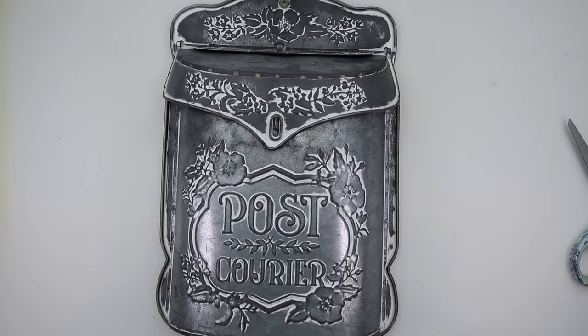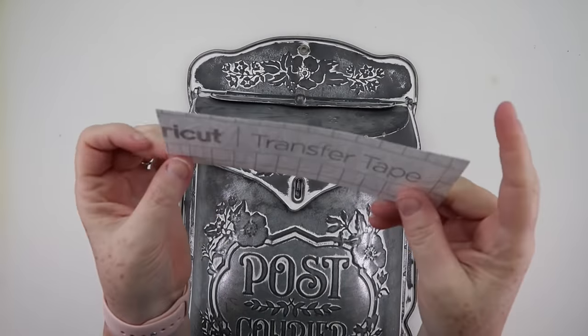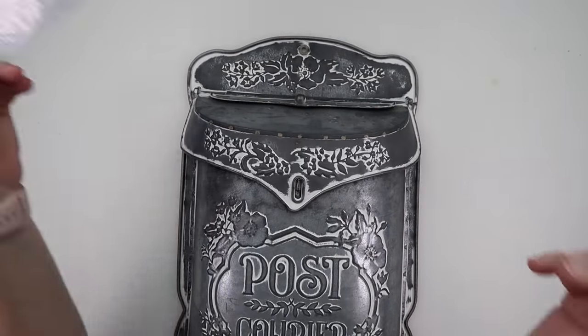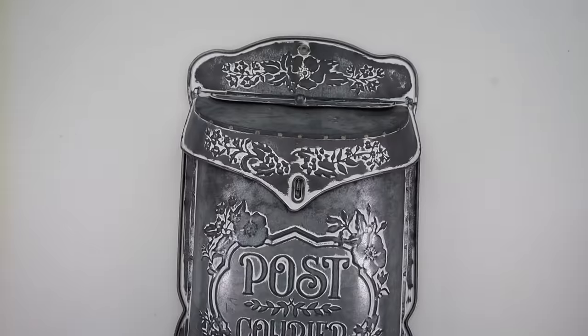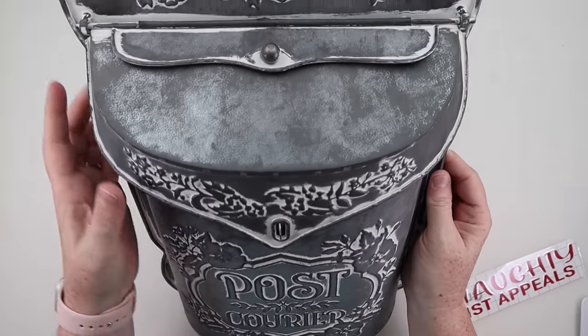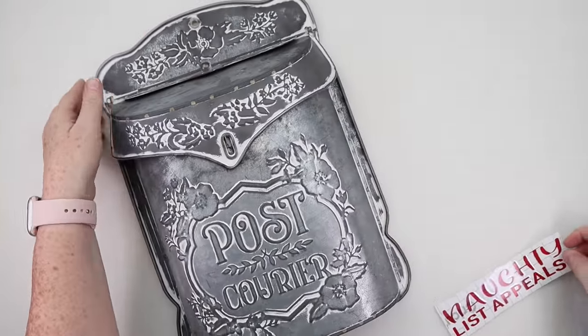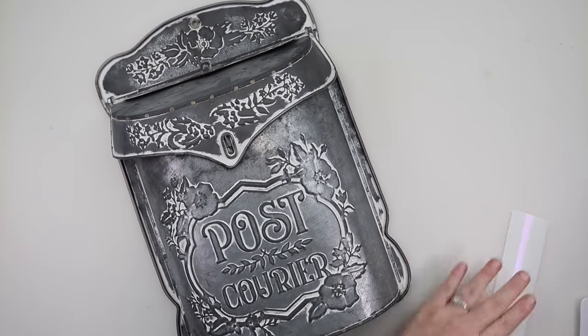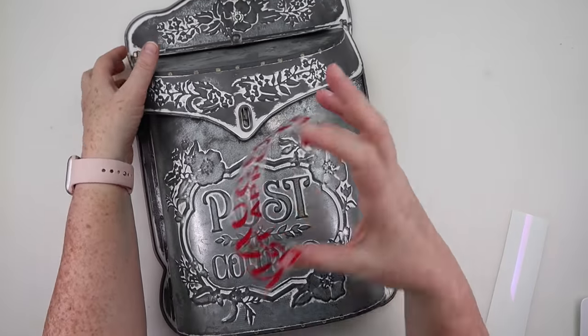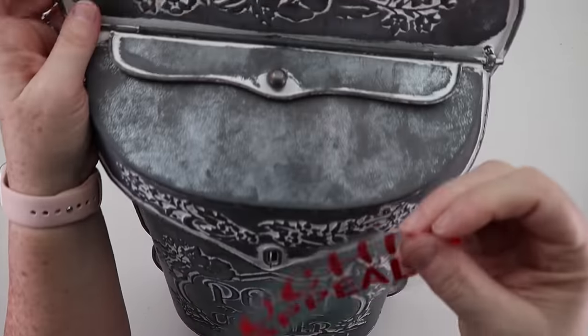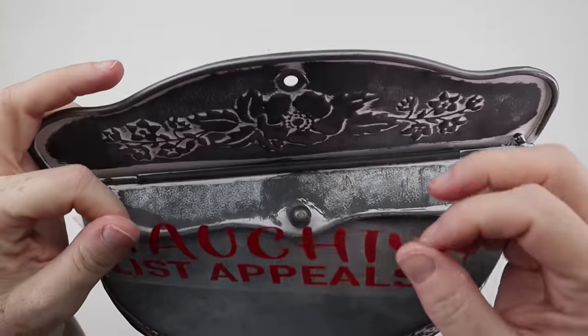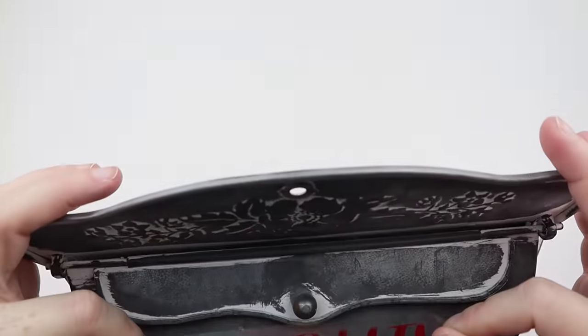So this is an easy one. All I'm going to do is cut out a decal. Since I have the naughty list vault, now I need a naughty list appeals mailbox. I ended up cutting out a vinyl decal in white, which in my head I said I'm going to cut it in red. Well, I cut it in white. So I'm going to give this away to one of you guys. Comment down below and let me know if you're on the nice list or if perhaps you're going to be submitting an appeal to the naughty list appeals committee. Let me know that down below and I will pick a random winner to mail this decal off to.